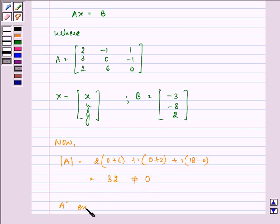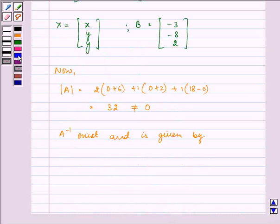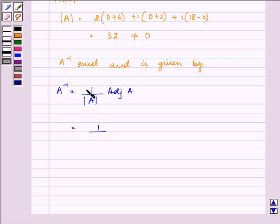A inverse exists and is given by 1 over determinant A times adjoint A. That equals 1 over 32 times adjoint A, which we found as 6, minus 2, 18, 6, minus 2, minus 14, and 1, 5, and 3.